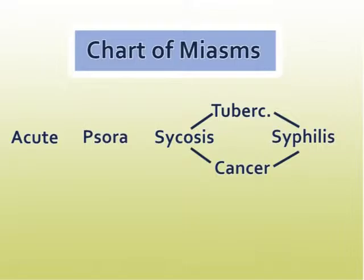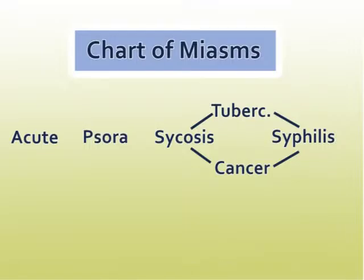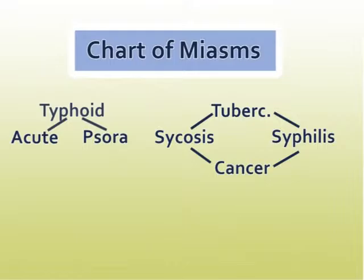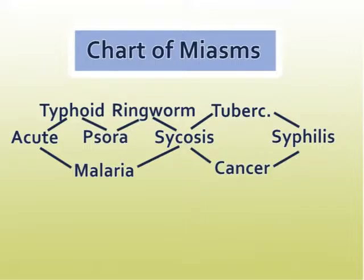So then we had syphilis, sycosis, psora, and the acute miasm. The cancer and tubercular miasms are combined miasms between sycosis and syphilis. Sankaran then asked himself: if a combination between those two miasms is possible, are other combinations possible? Maybe between acute and psora, or between psora and sycosis. The answer is yes. He added a few more miasms: Typhoid miasm between acute and psora; Malaria miasm between acute and sycosis; Ringworm miasm between psora and sycosis; and Leprosy miasm between sycosis and syphilis. So the chart we now have covers this full range.